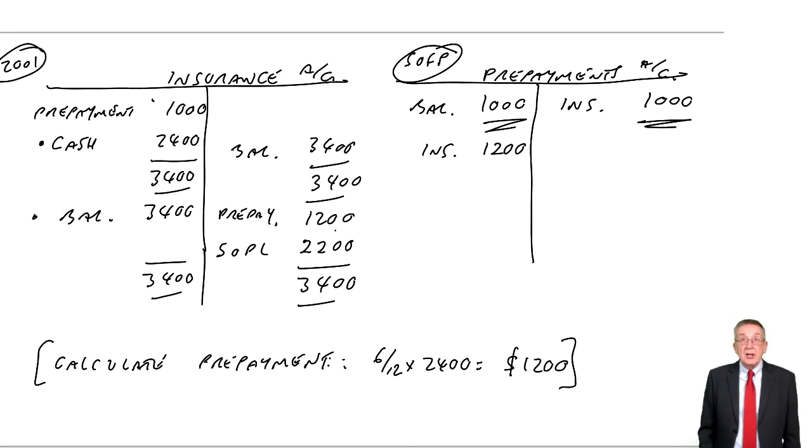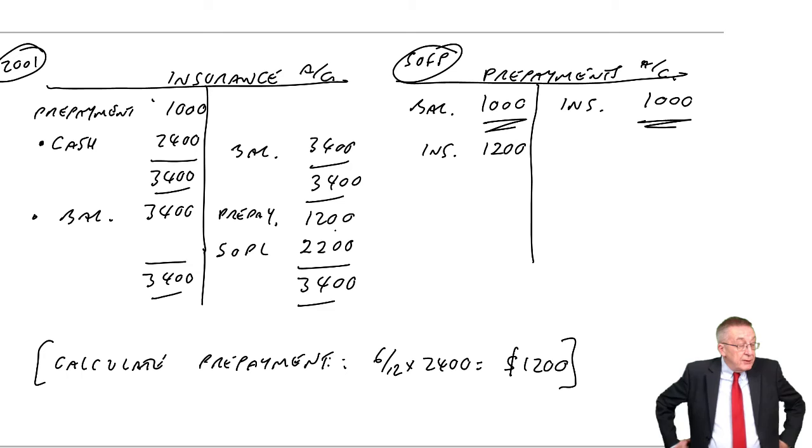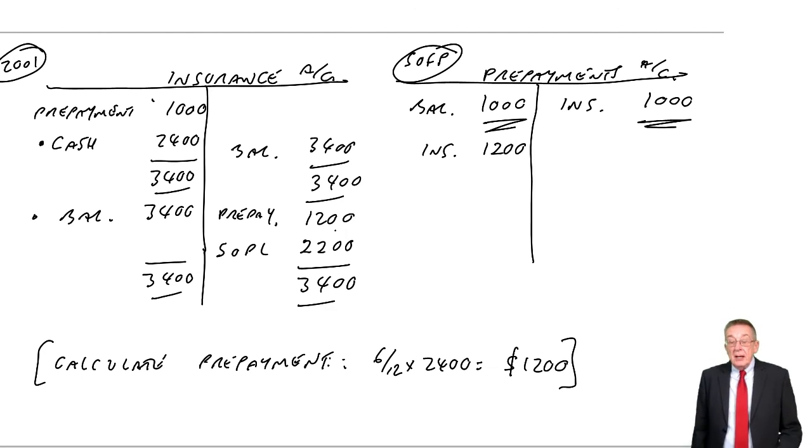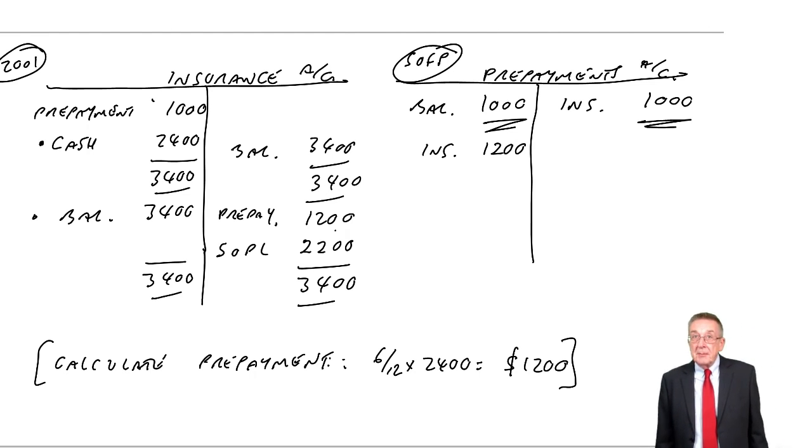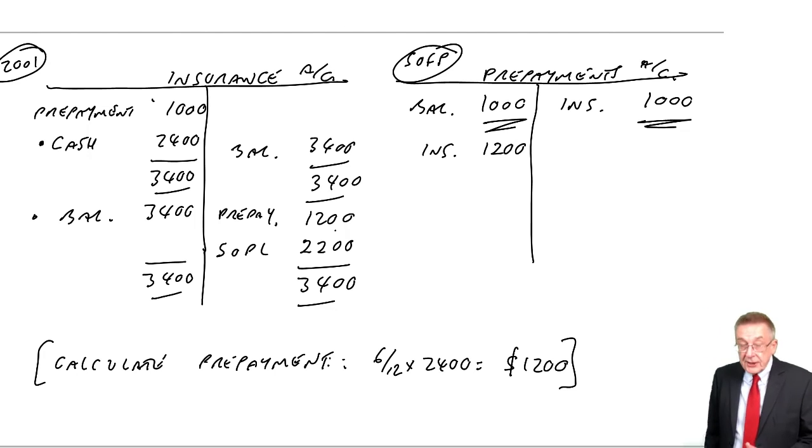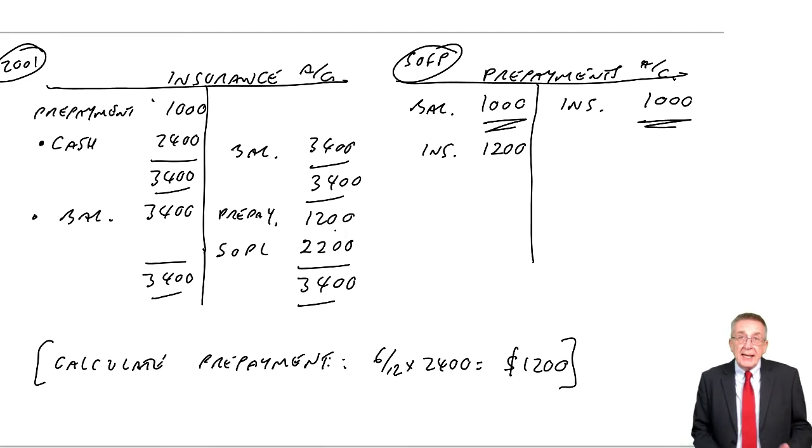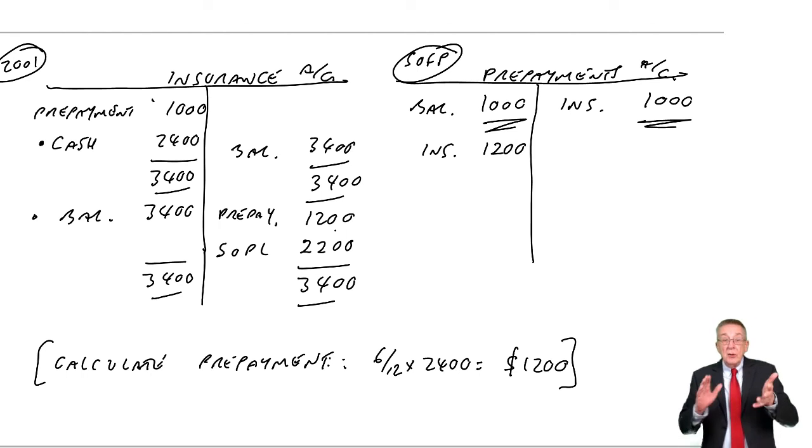So there we are, there's the complete picture. Even though I've probably said it three or four times already, for one last time, check you're happy with the debits and credits. But in the exam, you will not be asked to write up T-accounts. There could be a question checking you know what the entries are, but most questions will want to know what's the expense, what will appear in the Statement of Financial Position. So go back and check you were happy with what I did. You don't need T-accounts to get those figures.